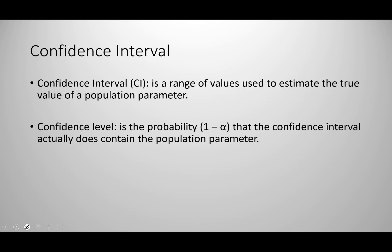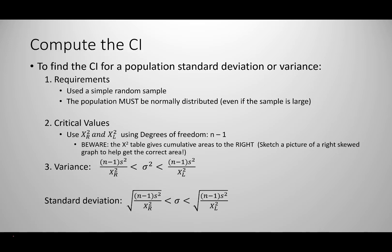Point estimates for variance and standard deviation can't guarantee accuracy, so usually we construct a confidence interval — a range of values used to estimate the true value of a parameter. To do a confidence interval we need to know our confidence level, which is the probability that the confidence interval actually contains the parameter, and we often find that by computing 1 minus alpha. There are three main steps to find our confidence interval.